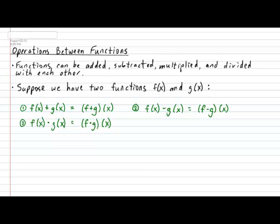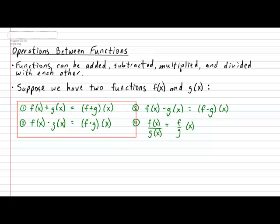And finally, for division, it looks like the following. Number four. So suppose I were to perform f of x divided by g of x. The notation for this is f over g of x. The brackets around the f over g are optional. I would like you to please surround these four operations with a nice box.